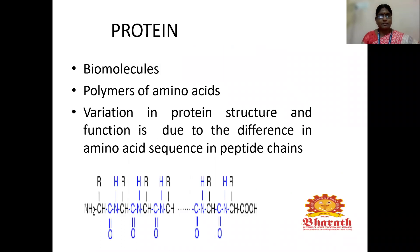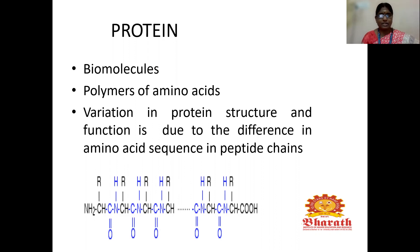First we'll discuss about the structure of proteins. We all know that proteins are named as biomolecules, and they are the polymers of various amino acids. We can predict the structure of proteins by variation in their protein structure and function. This variation is due to the difference in amino acid sequence in peptide chains.